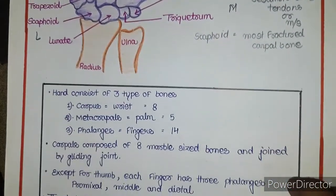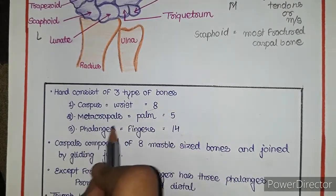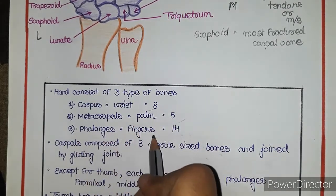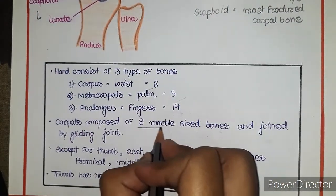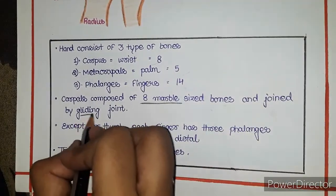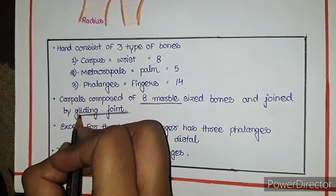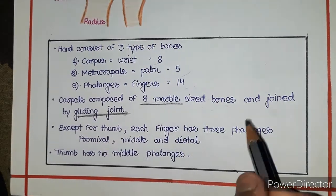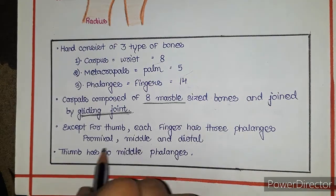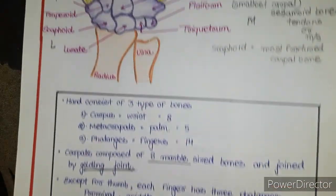To summarize, the hand consists of three types of bones: carpals, which form the wrist joint and are eight in number; metacarpals, which are the palm bones and five in number; and phalanges, which are the finger bones and fourteen in number — three in each finger and two in the thumb. Carpal bones are small, marble-sized bones joined by gliding joints. Except for the thumb, each finger has three phalanges: proximal, middle, and distal.